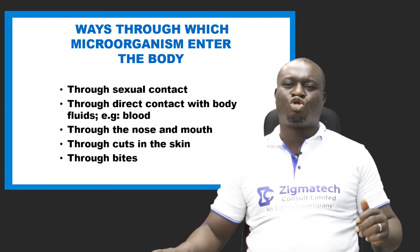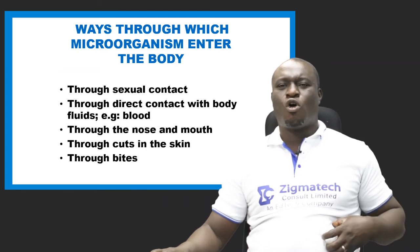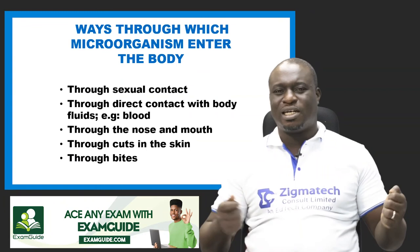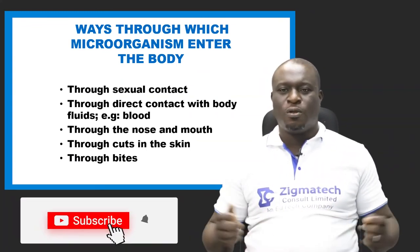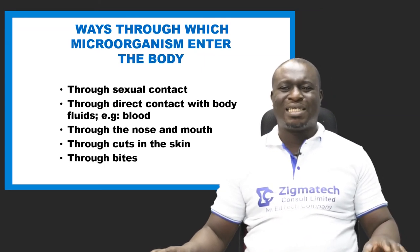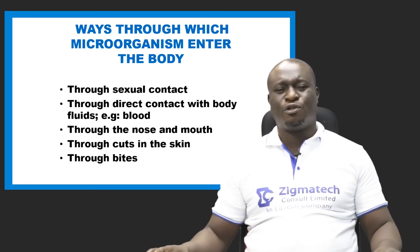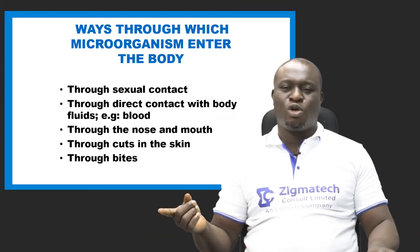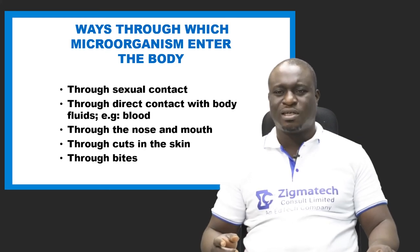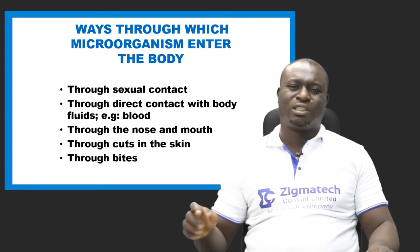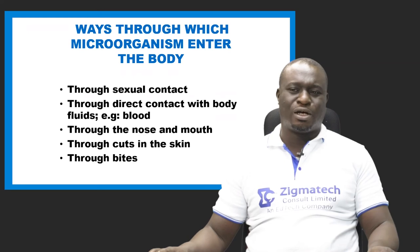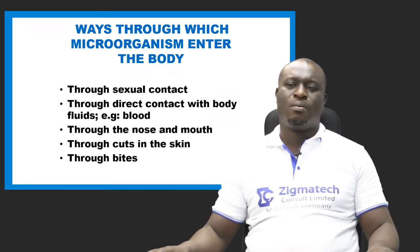There are several ways microorganisms enter into the body. One is through sexual contact. Another is by direct contact with body fluids like blood — which is why blood transfusions must be thoroughly screened. Microorganisms can also enter through the nose and mouth, through cuts in the skin, and through bites.